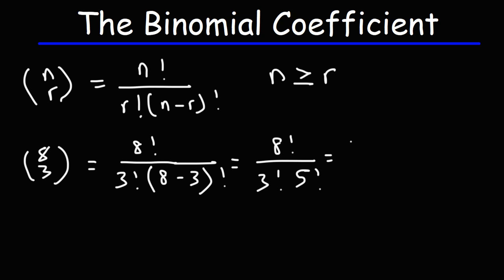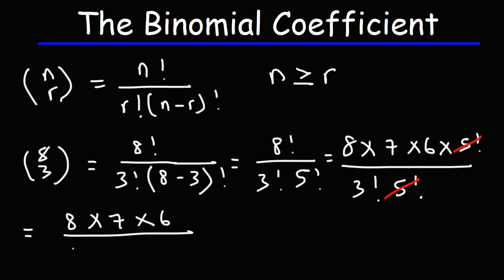Now 8 factorial is 8 times 7 times 6 times 5 factorial, because this will take us all the way to 1, but we don't need to go that far. Notice that we can cancel a 5 factorial. So we're left with 8 times 7 times 6.